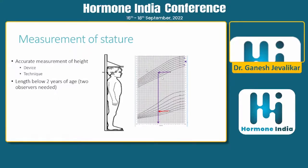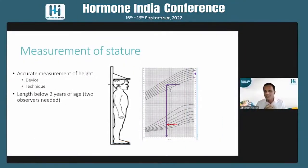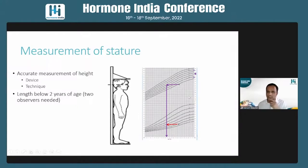Not just measuring but plotting height is also important. You cannot use tables or formulas from Nelson to decide if a child is short — you must plot a growth chart, either manually or digitally using tools like the IAP app. Plot height and weight as a tiny dot, not a large mark, and on the extreme right side of the growth chart, plot the target mid-parental height.